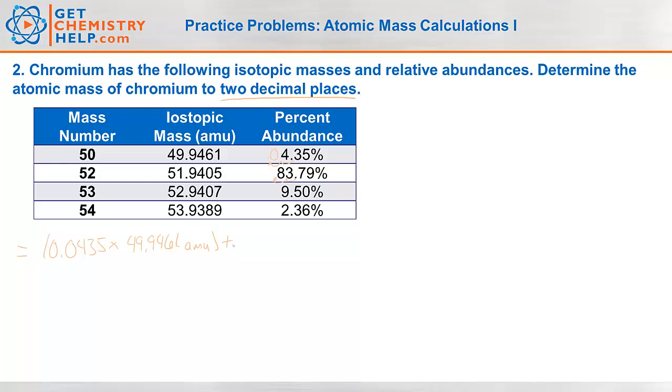So the abundance times the mass of the first isotope. So 49.9461 amu plus the second isotope. So move the decimal two places. So 0.8379 times the isotopic mass 51.9405 amu. And again for our third isotope. So 9.50% becomes 0.0950 times the mass 52.9407 atomic mass units. Plus the fourth one. So 2.36% would be 0.0236 times that mass 53.9389 amu.